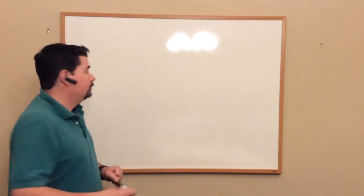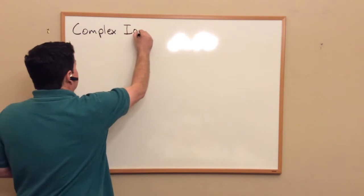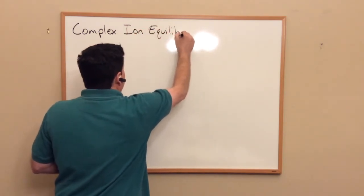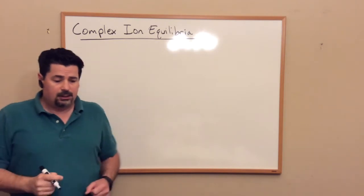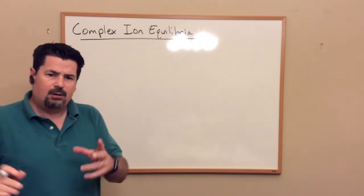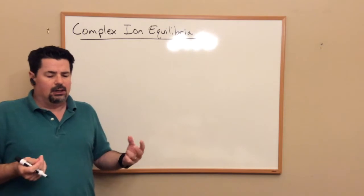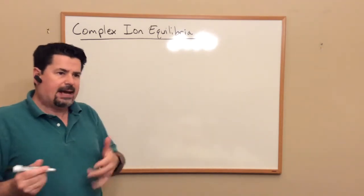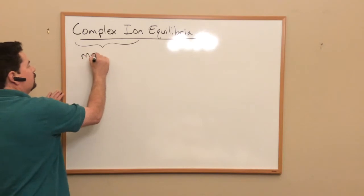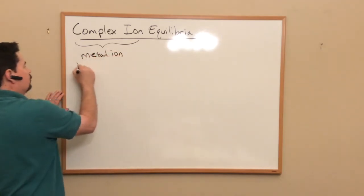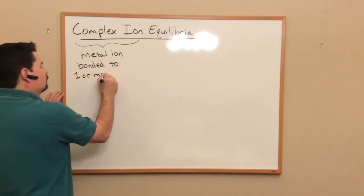Anyway, in this lecture I wanted to talk about complex ion equilibria. And what's a complex ion? Well, a complex ion is an ion that consists of a metal ion in the center attached to one or more molecules called ligands. I guess a ligand could be an atom, but anyway, a complex ion is a metal ion bonded to one or more ligands.